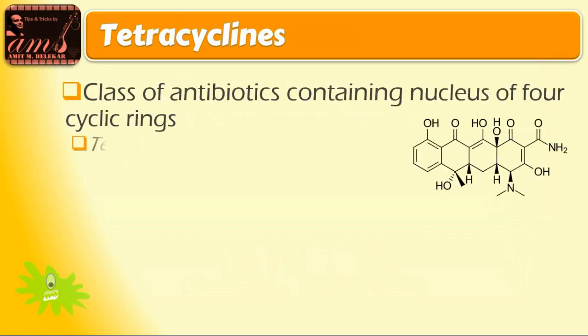Tetracyclines are the class of antibiotics containing a nucleus of 4 cyclic rings. Tetra means 4, cyclines means cycles. So 4 cyclic rings are present in the tetracyclines.